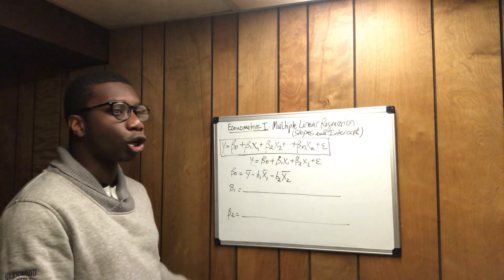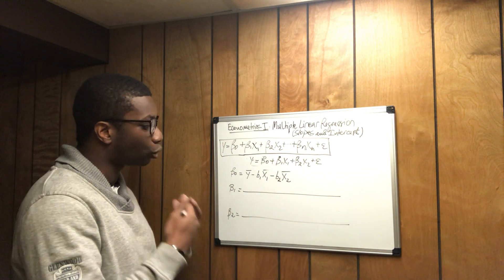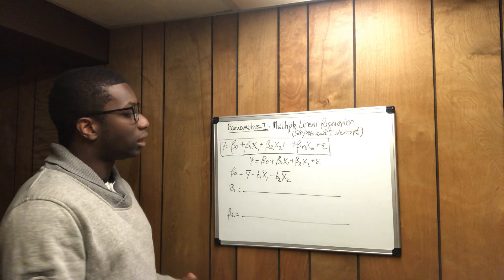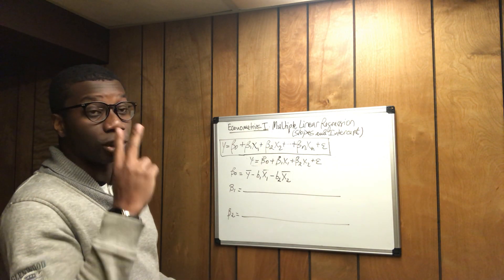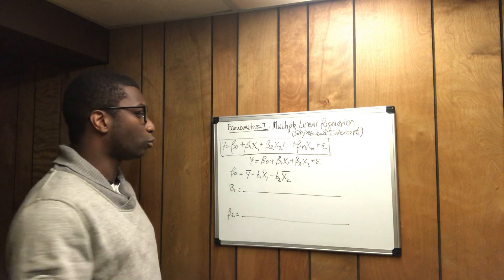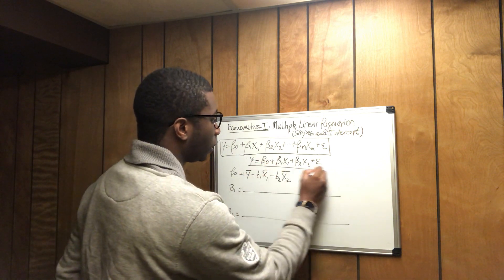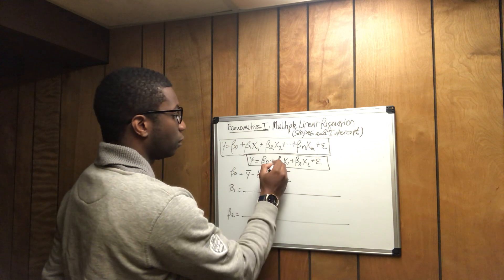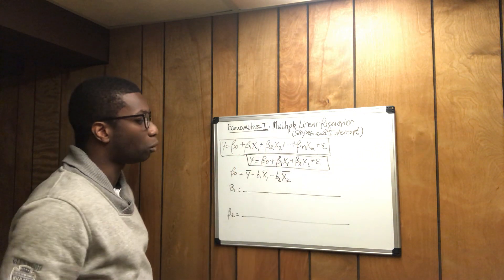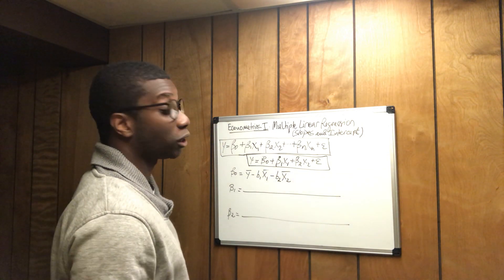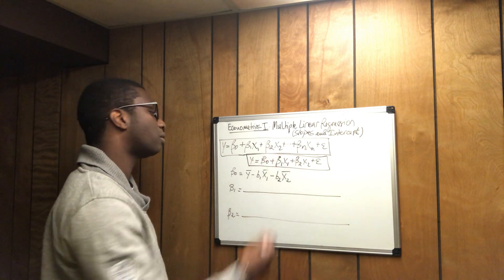But we are concerned with how to calculate the slope and the intercept in a multiple linear regression that has only two independent variables. So we're concerned with this equation here, which is y equals beta 0 plus beta 1 times x1 plus beta 2 times x2 plus the standard error.